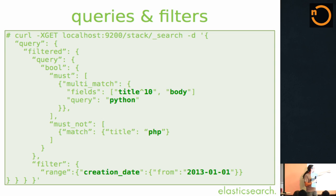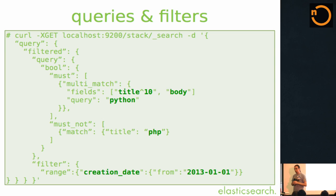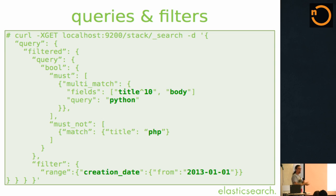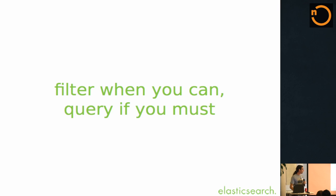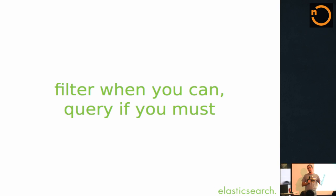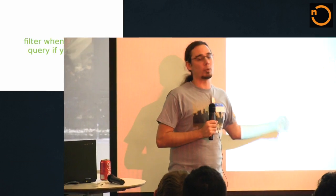Whereas a query determines how well the document matches. Here I'm indicating that title is more important than body by a factor of 10, telling my search engine that title matters more. Because filters are more performant and primarily cacheable, always use filters. Only when you cannot use filters, use queries.